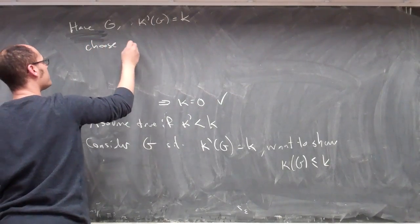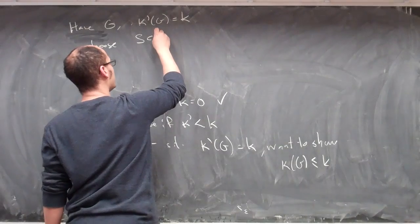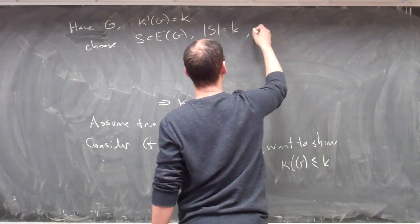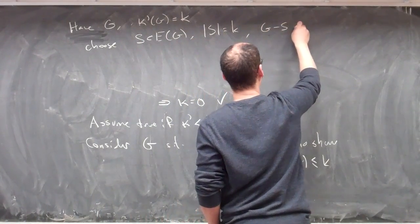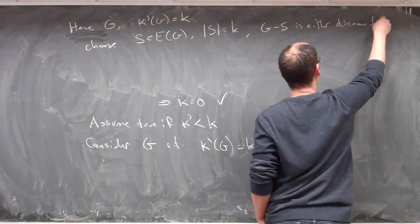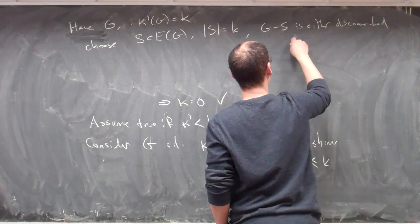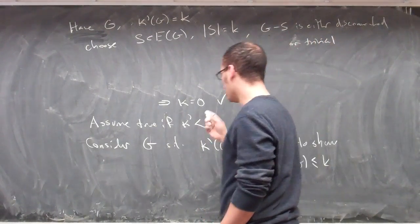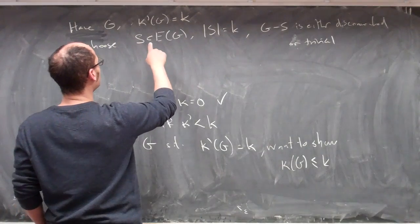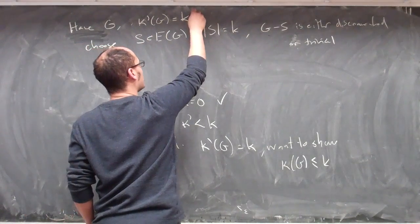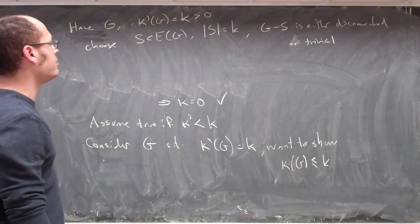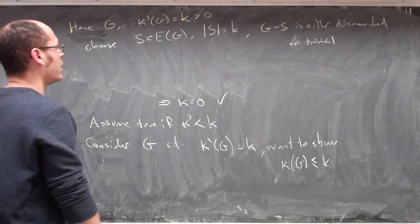We have G whose edge connectivity is k. So we can choose some set S, a collection of edges, which has exactly k edges, such that if I remove those then this is either disconnected or trivial. We're assuming k is bigger than zero, so we do have at least one edge that we need to remove.